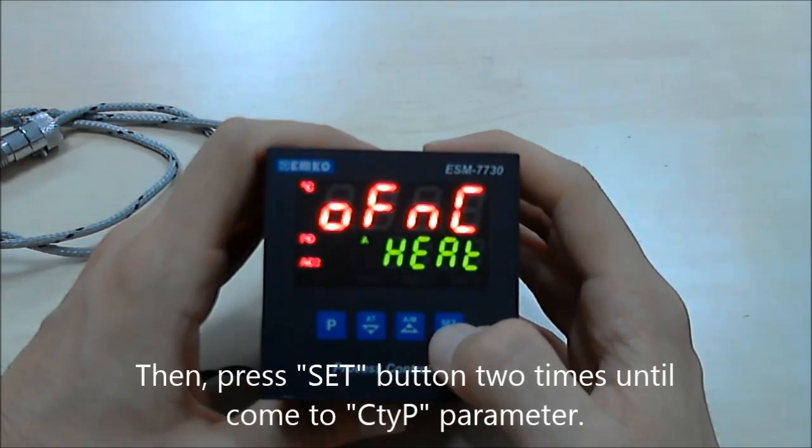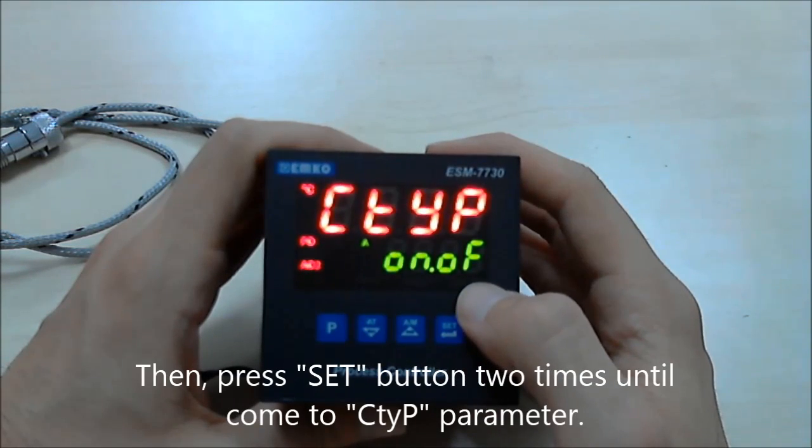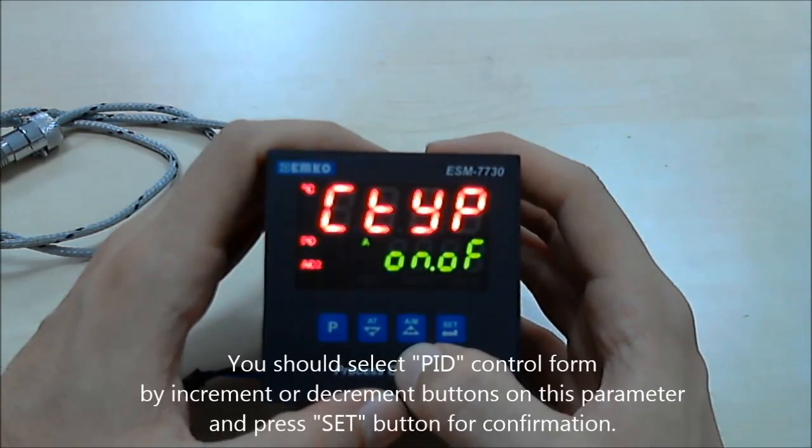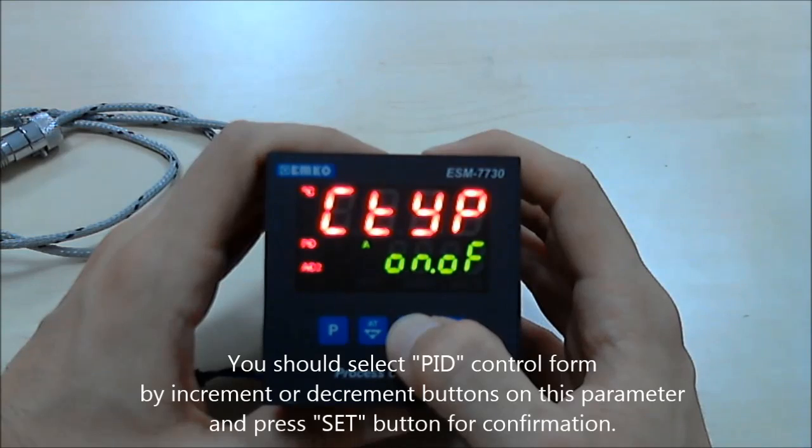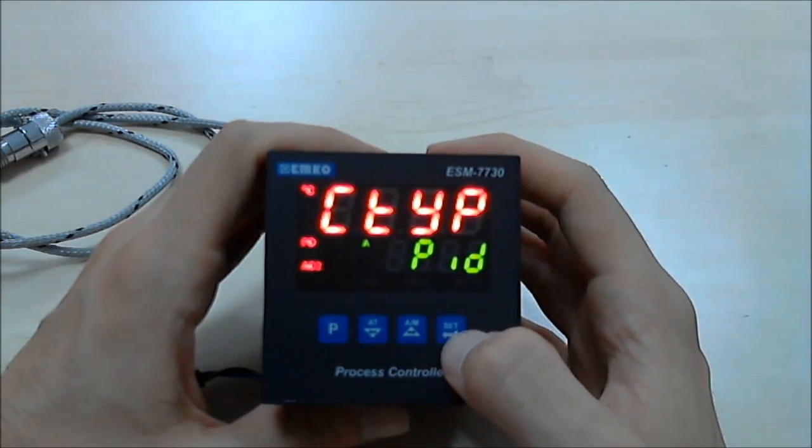Press set button again. Again press set button. As you see it's selected by on-off control. So we are changing it by decrement or increment buttons to PID and press set button for confirmation.